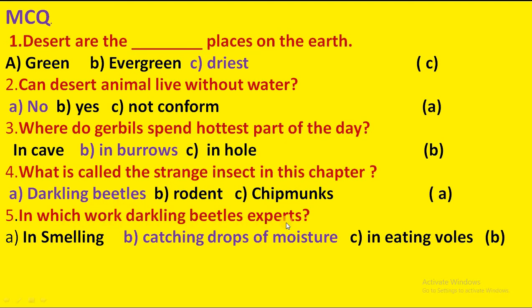In which work are darkling beetles experts? Kis kaam mein darkling beetles mahir hoti hain? Options: in smelling, catching drops of moisture, in eating walls. Option B is correct: catching drops of moisture.